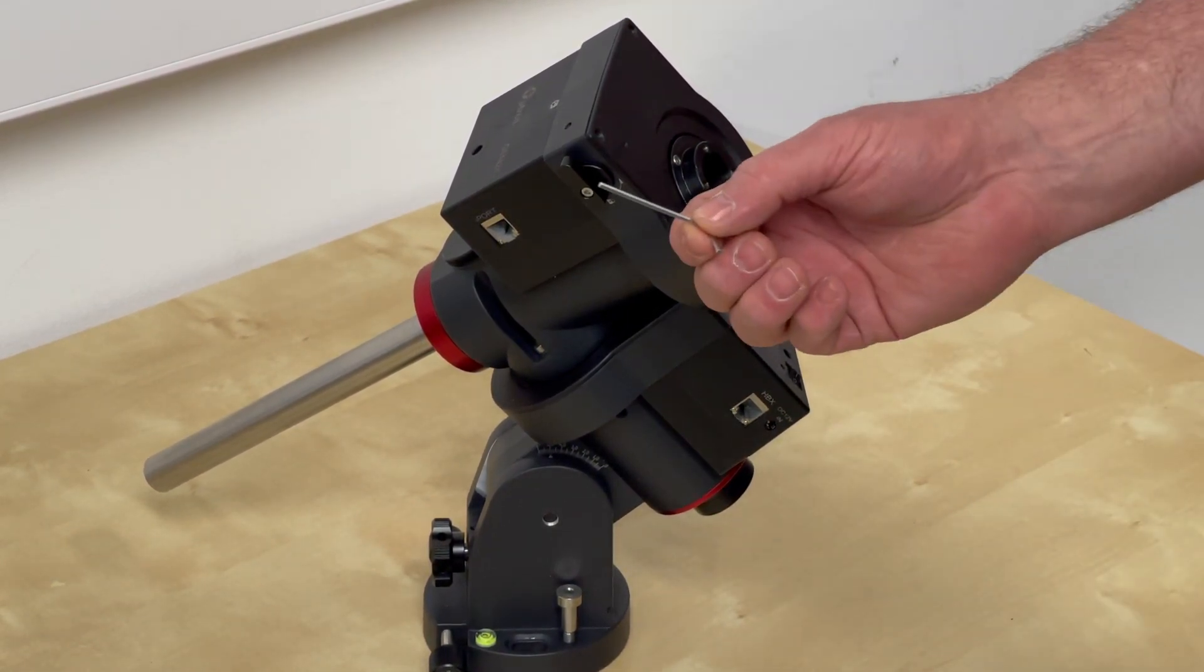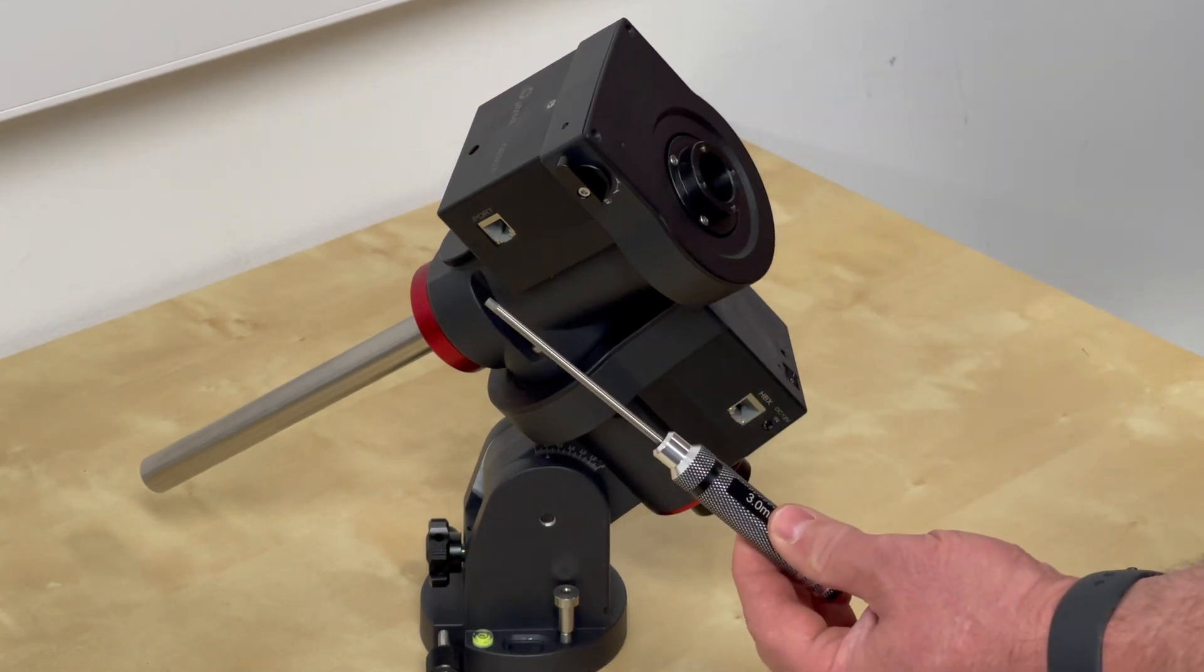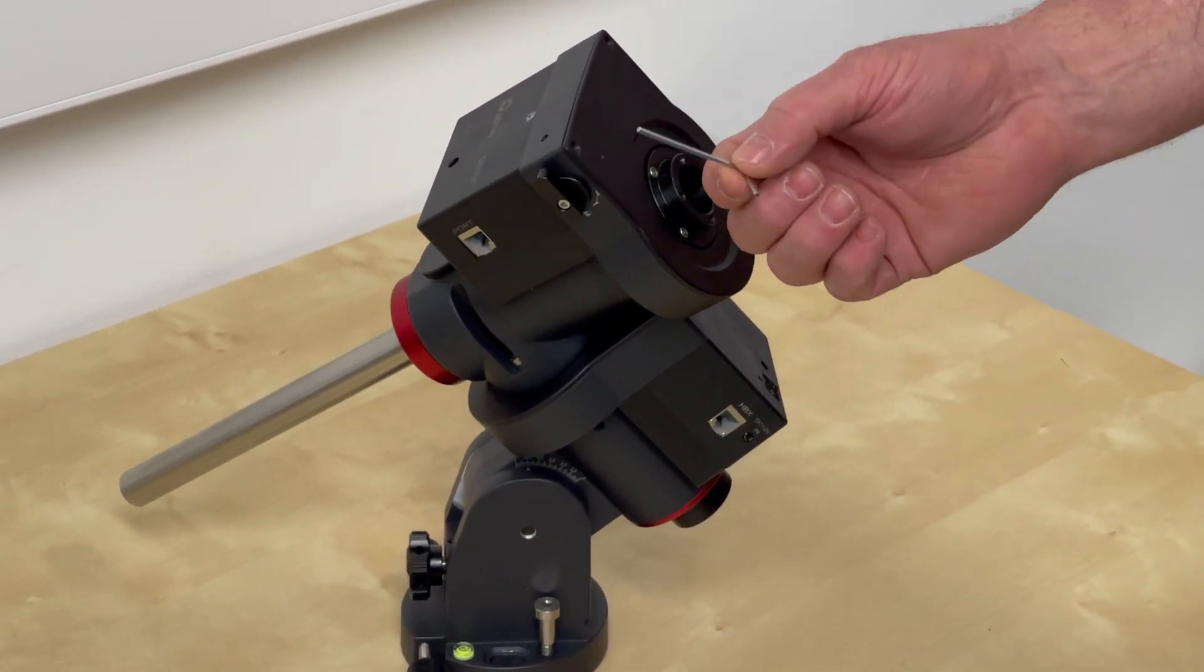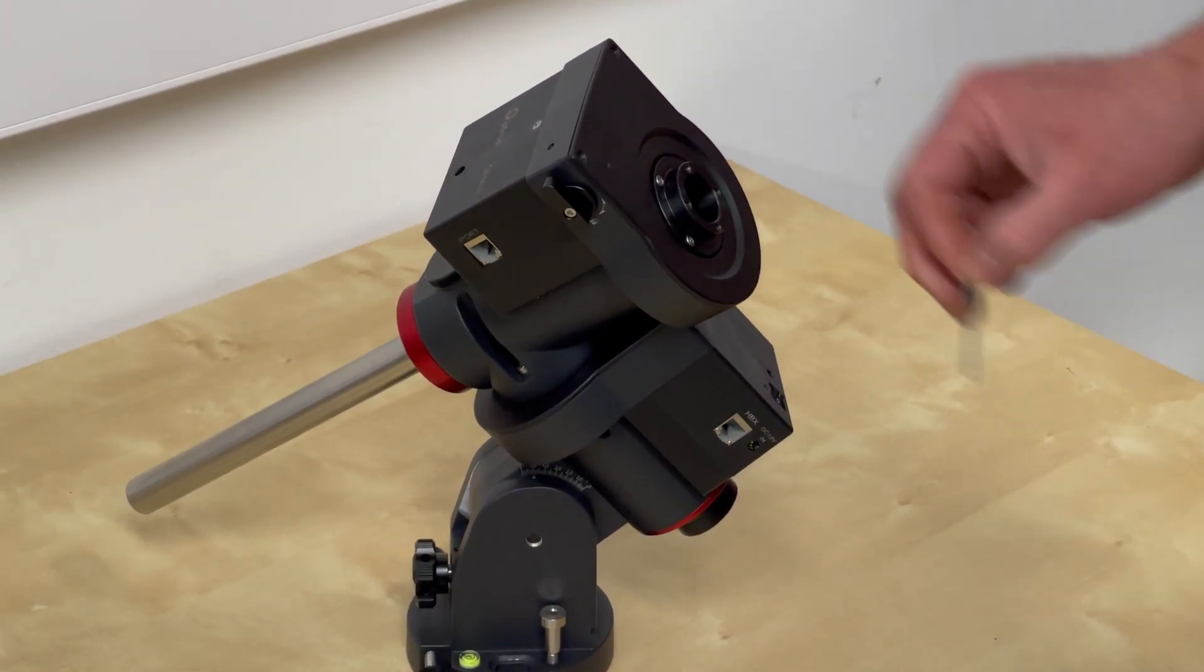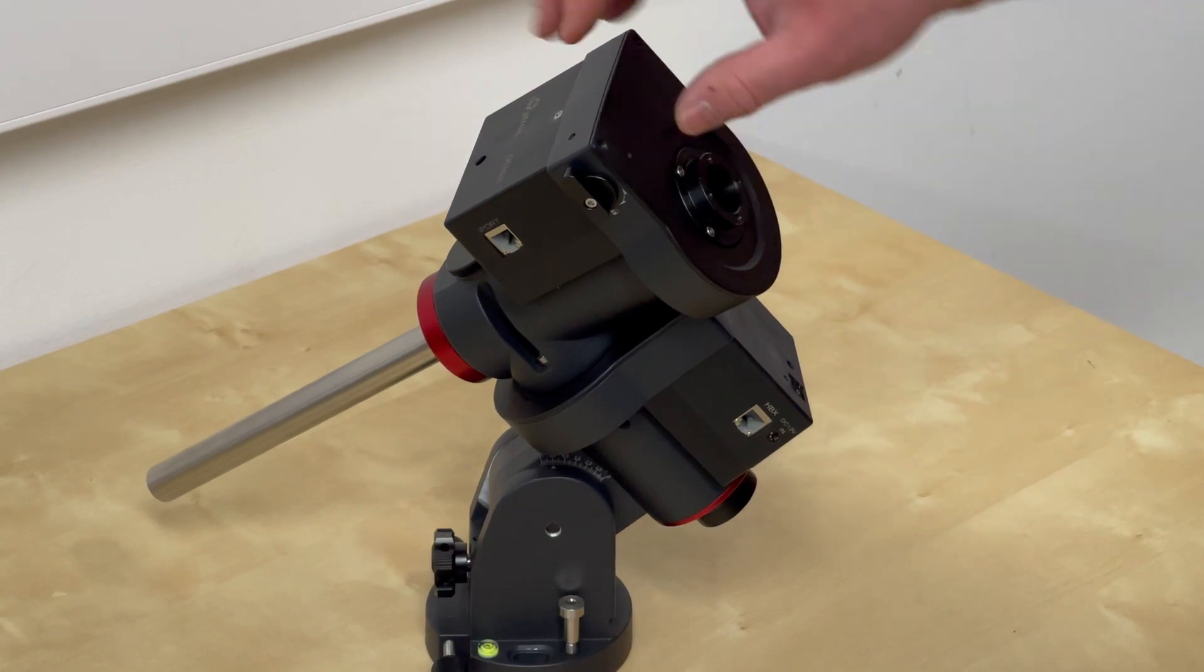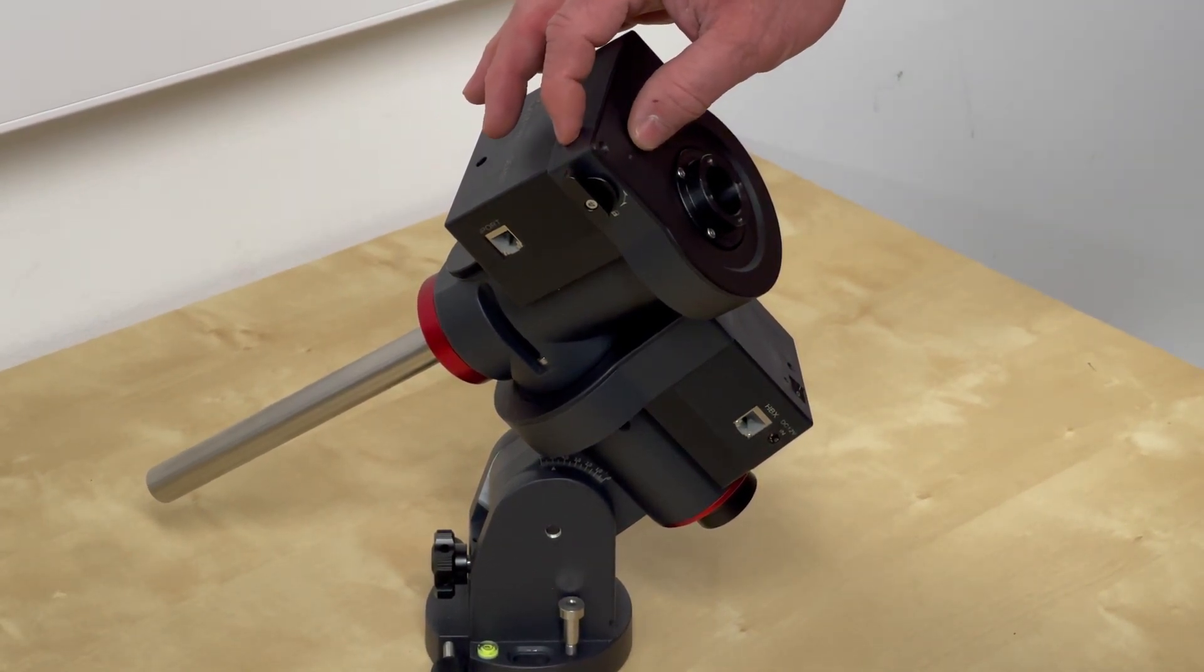So you will need a 2mm Allen key, a 3mm Allen key, you can use a screwdriver one if you've got one or a standard Allen key. There's a locking screw in the top in this hole and there's an adjustment hole there which has got a screw in it.